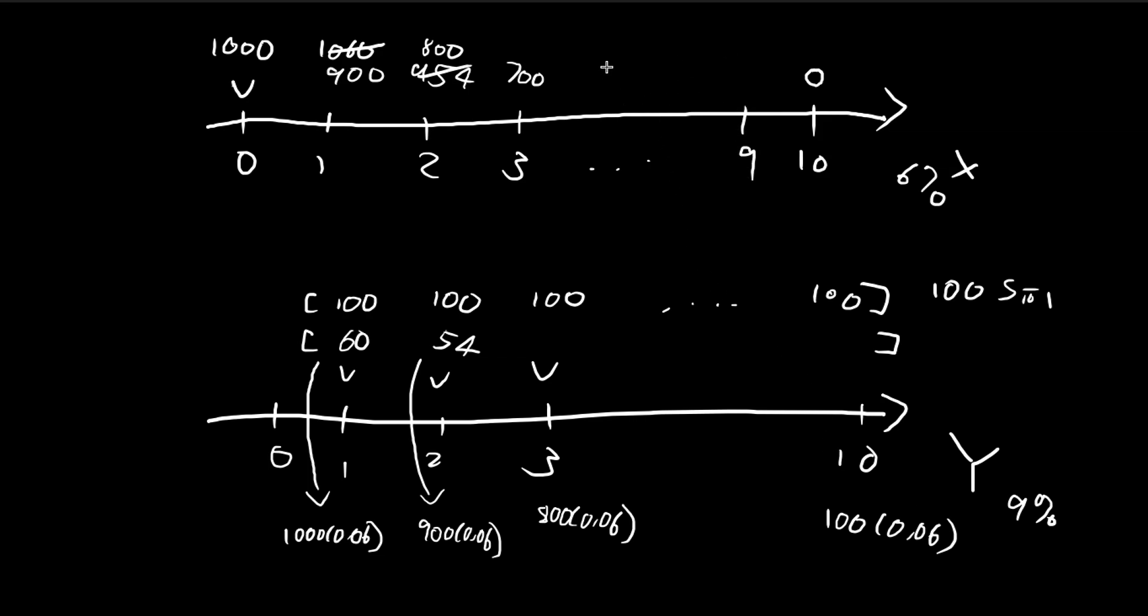So you can view it like this. So after all the withdrawals at time 9, we are going to be left with $100. And then this final time period, this $100, is going to earn 6% interest. So the amount of interest is just 100 times 0.06.